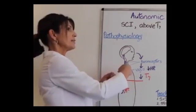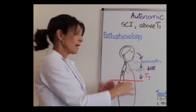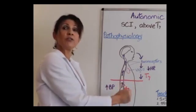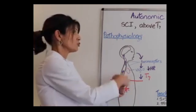So what you get is vasodilation above the level of the injury and vasoconstriction causing very dangerous hypertensive blood pressures below the level of the injury.